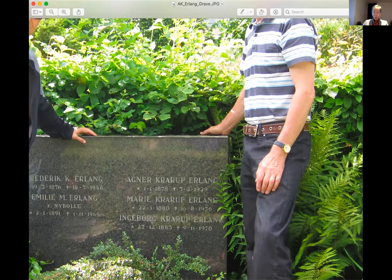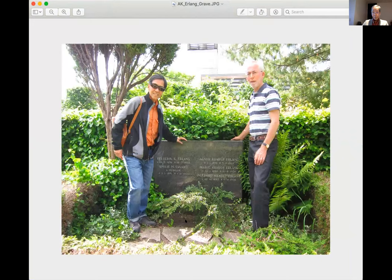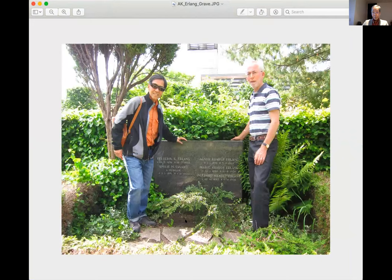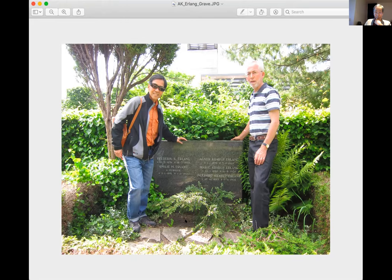A.K. was born in 1878 and died in 1929, so he was about 51 years old. At that time in Europe, the life expectancy was not that high. In this same graveyard, not very far from the center of Copenhagen, is another grave for a famous Danish man, Hans Christian Andersen.